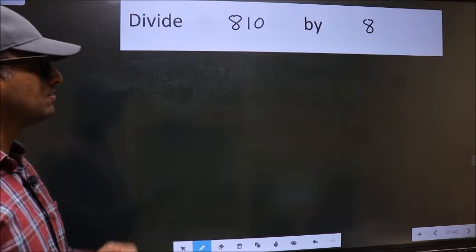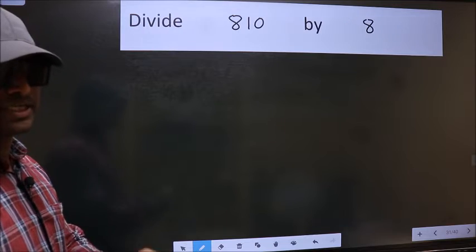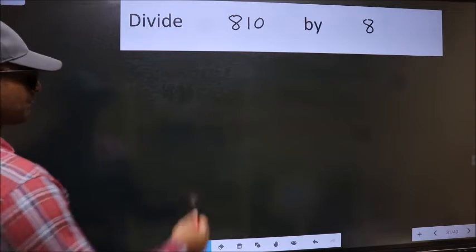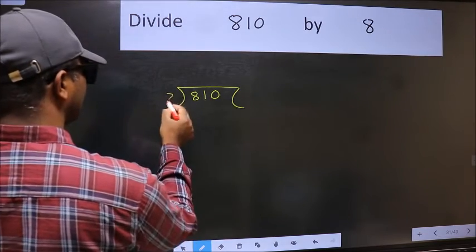Divide 810 by 8. To do this division, we should frame it in this way. 810 and 8 here.